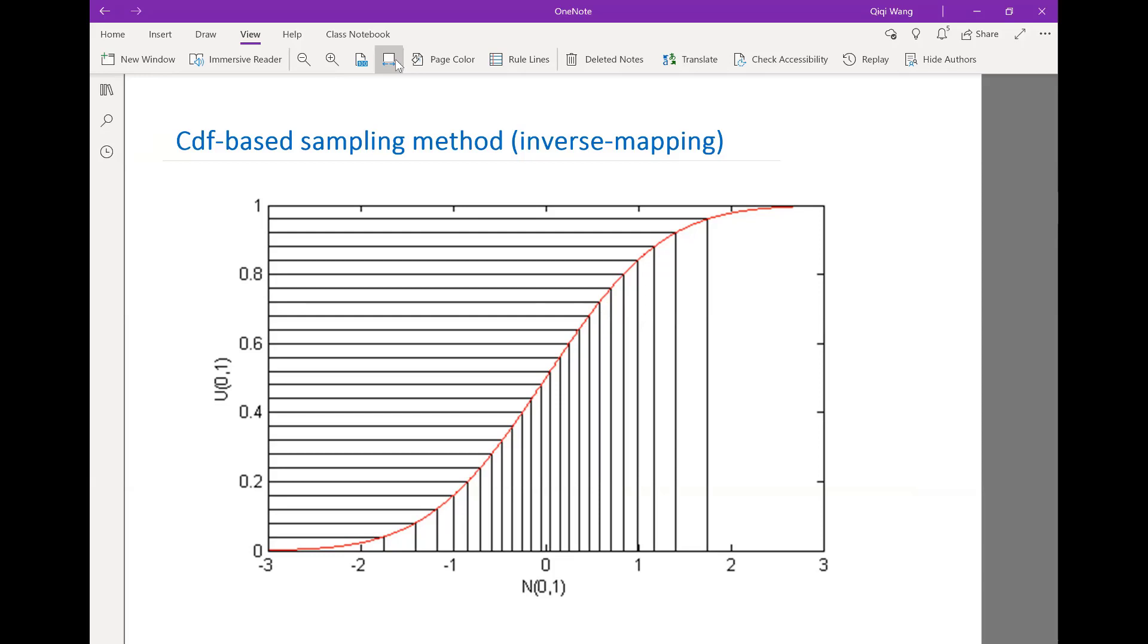So naturally, the average number of samples that lies in the fixed interval is going to be less if the interval in x is wider. That corresponds to a lower PDF.